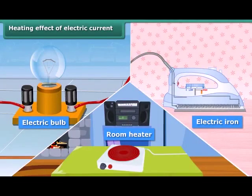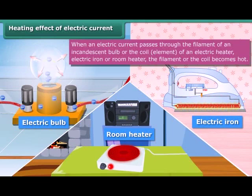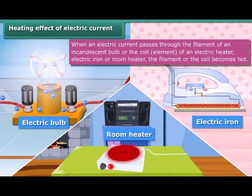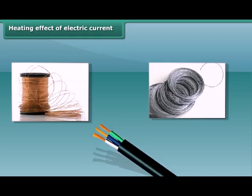When an electric current is passed through a metallic wire — like the filament of a bulb or the coil of an electric heater, geyser, electric iron, or room heater — the coil becomes hot and glowing. This is known as the heating effect of electric current. In this condition, they radiate heat and light. The amount of heat produced in a wire depends on its material, length, and thickness.